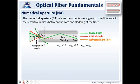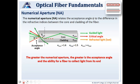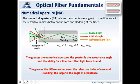For numerical aperture: the numerical aperture relates the acceptance angle to the difference in refractive indices between the core and the cladding of the fiber. The greater the numerical aperture, the greater the acceptance angle and the ability for the fiber to collect light from its end. The greater the difference between the refractive index of the core and cladding, the larger the angle of acceptance.